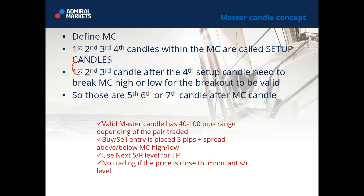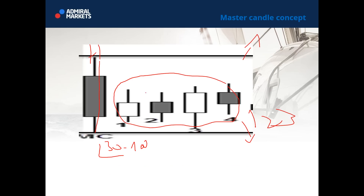If you don't see a breakout within those candles, you simply don't have anything to trade. That is the rule and we should respect those rules. Those are the fifth, sixth, or seventh candle after the master candle. The first four should define this as a master candle, and either the first, second, or third candle after we've defined it should break either the high or the low. A valid master candle has a range of 30 to 100 pips — you can watch from 30 to 100 and more pips, depending on the pair traded.